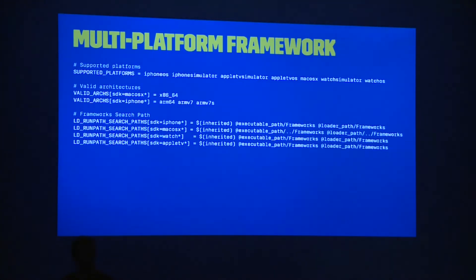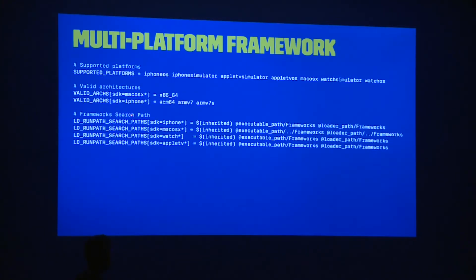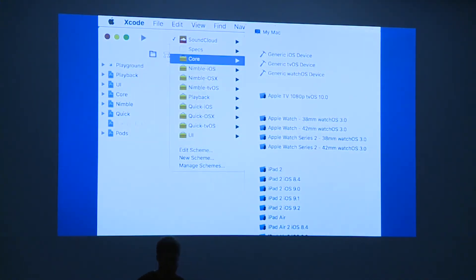Something very interesting is making these frameworks multi-platform. This is a trick one of my colleagues told me — it's not documented, but using xcconfig files you can specify the supported platforms. You say 'SUPPORTED_PLATFORMS' and list all the platforms, and suddenly you have the framework working for all of them. You can also use conditional settings: depending on the SDK, the architecture you should use is different. For macOS use this one, for iPhone use another. You can also change the framework search path — macOS has an extra search path compared to other platforms. If you do that, your core framework can be compiled for all existing devices.